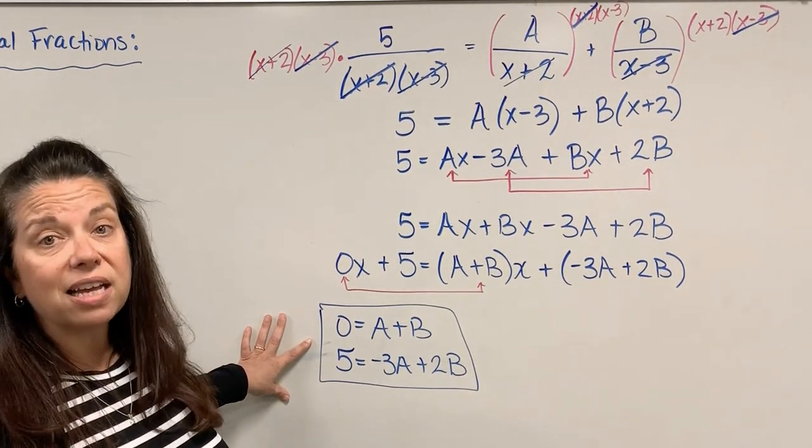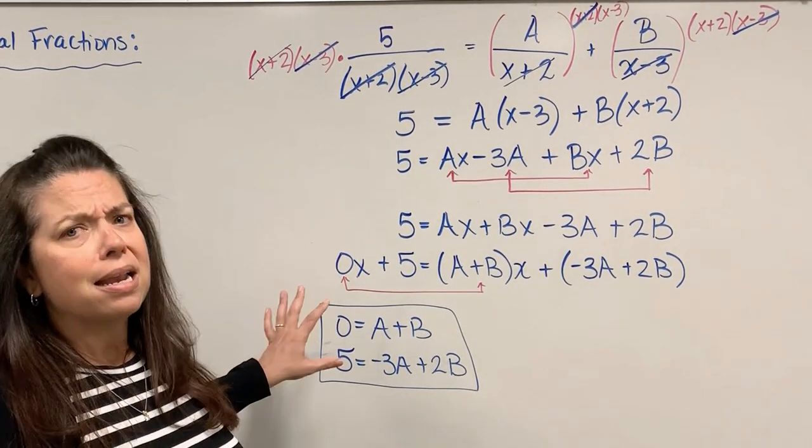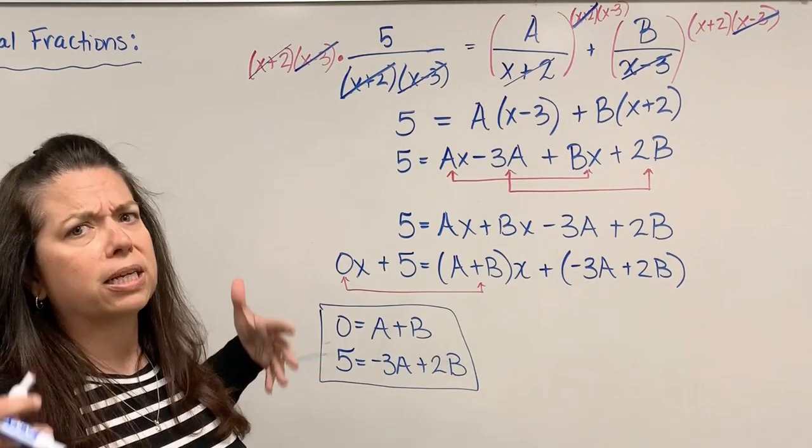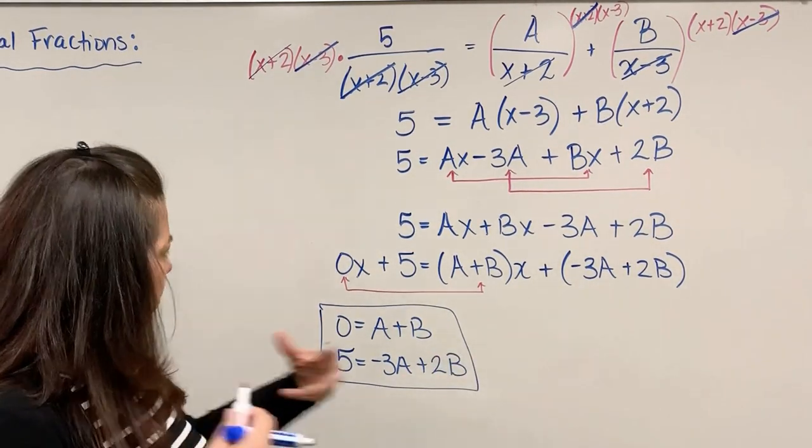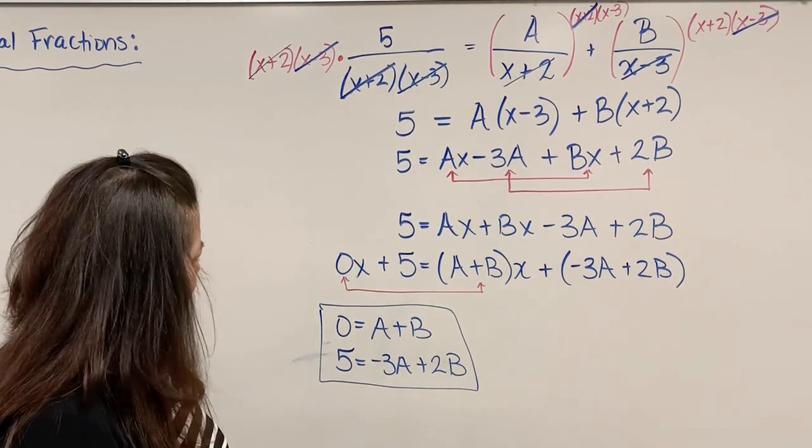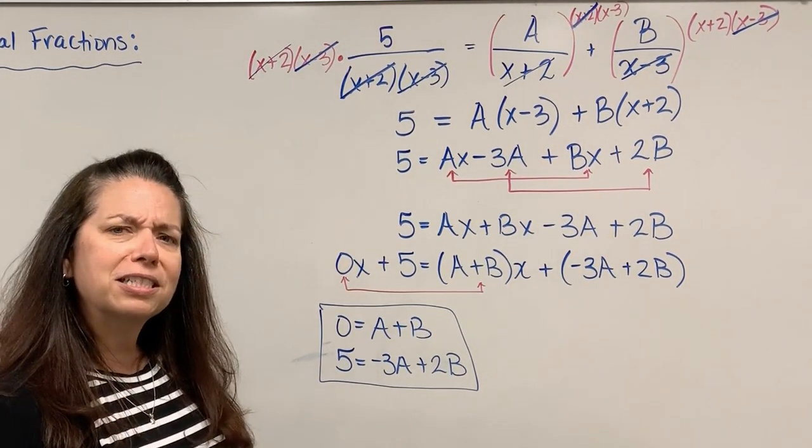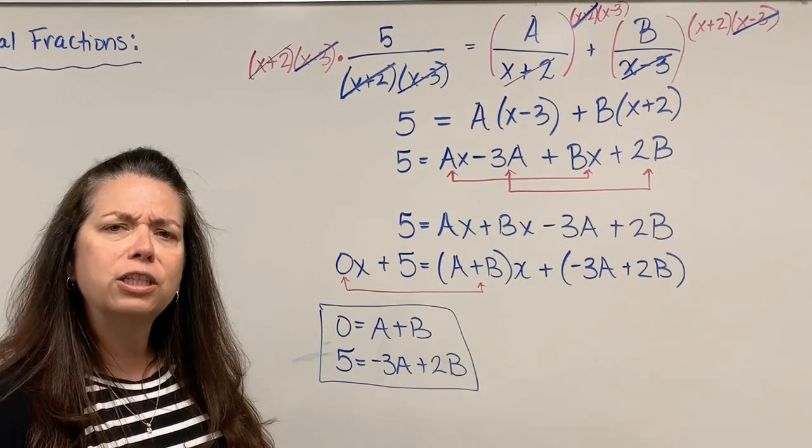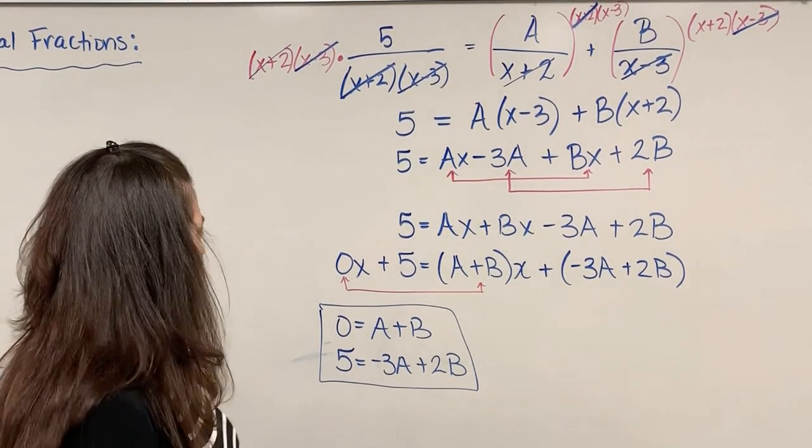We're calling them variables right now because they're unknowns that we need to solve for. Eventually they're going to be numbers once we go through that process. So now I have to think, how do I solve a system of equations? I have two equations and two unknowns.